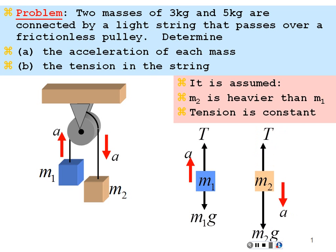For the free body diagram of mass 2: tension is pulling up, M2G is pulling down, and as a result of all these net forces acting on mass 2, it manages to accelerate downward with the value of acceleration A. The reason I want to make good free body diagrams is so that I can set up my Newton's Second Law equations based on these free body diagrams.